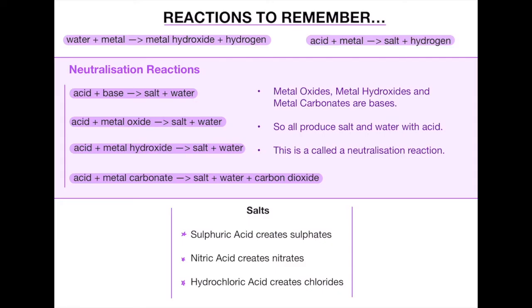Something key to remember is what salts different acids create. Sulfuric acid creates sulfates, nitric acid creates nitrates, and hydrochloric acid creates chlorides. So for example, aluminium reacting with sulfuric acid creates aluminium sulfate, or copper reacting with hydrochloric acid creates copper chloride — it's simply the metal name combined with the salt.